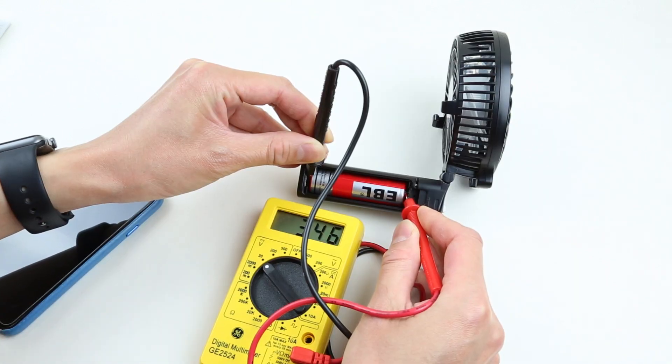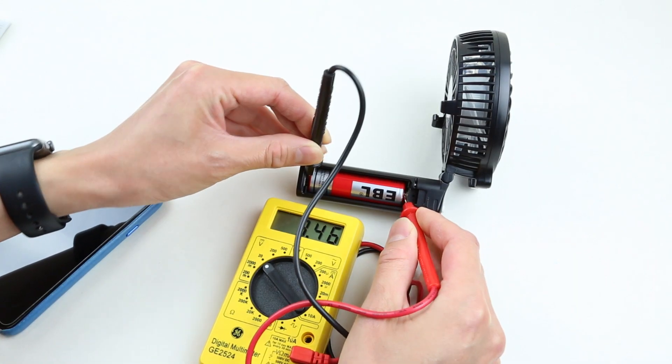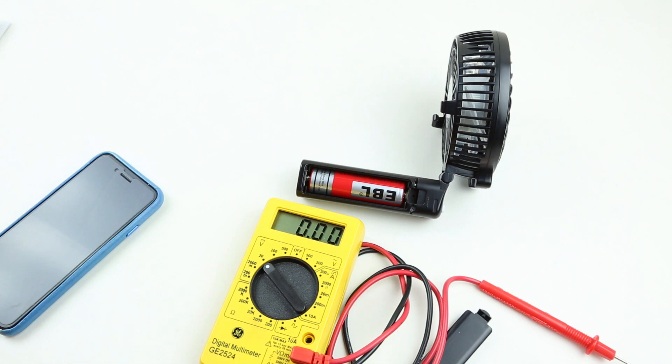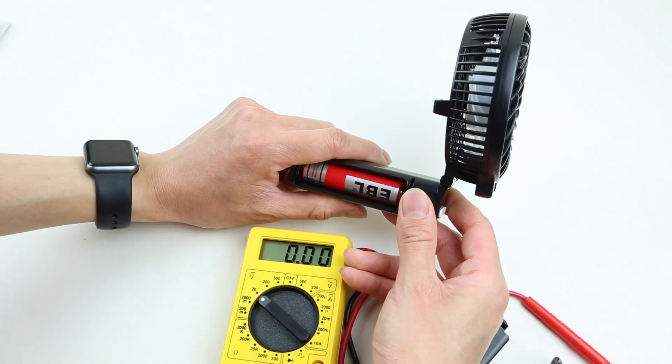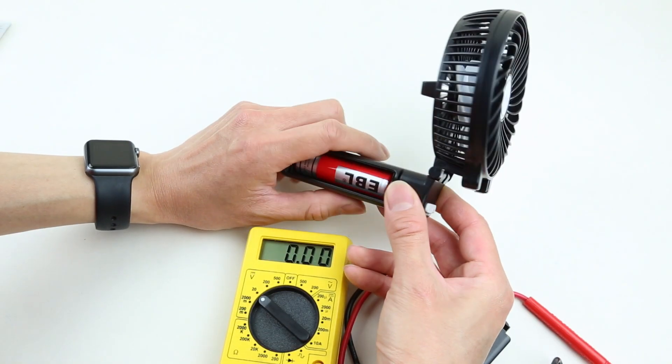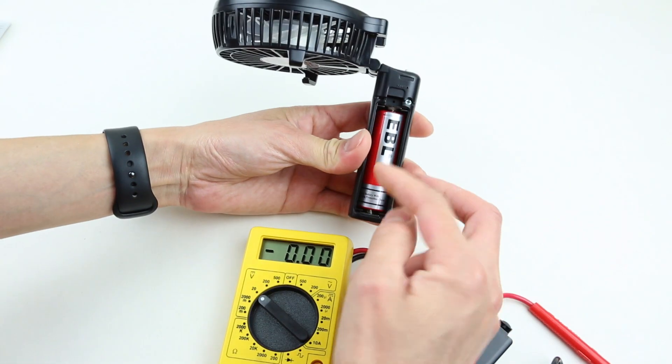There we go. We're at 3.46V, and that is an after-load voltage read, which means the idle voltage should come back up even more than that. So with that rate, this fan should last another hour without any problem using this battery.